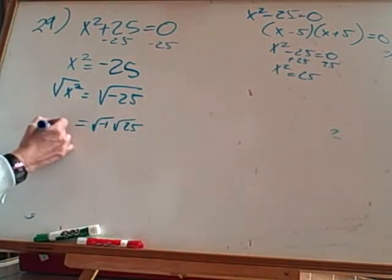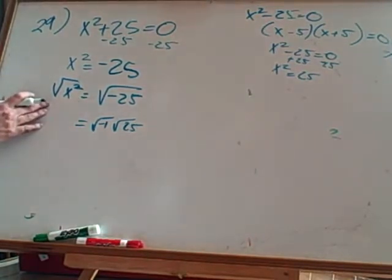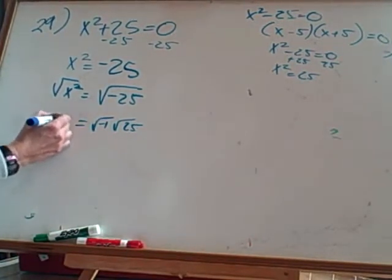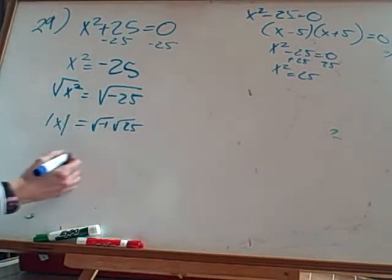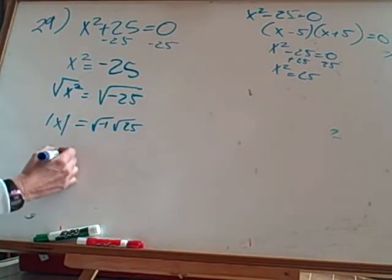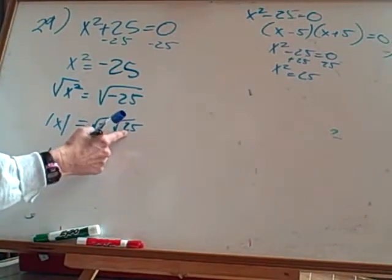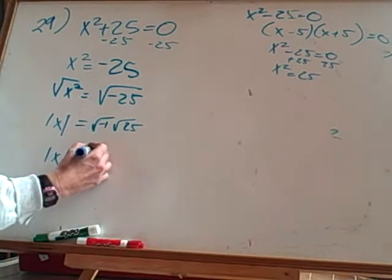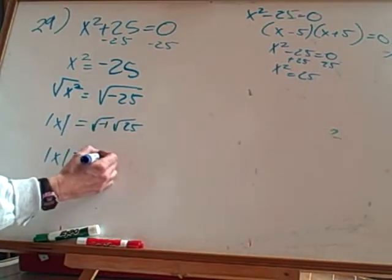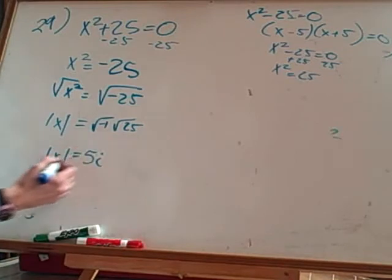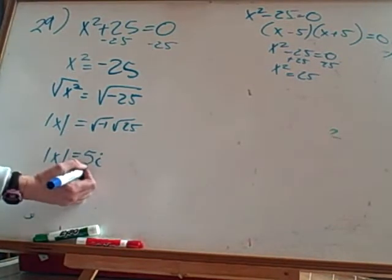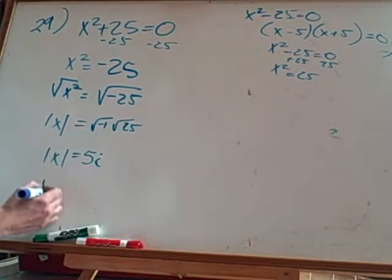What is the square root of x²? The absolute value of x. Perfect. So I'm just going to leave absolute value there for a second. The square root of 25 is 5, and the square root of -1 is i. So |x| = 5i, which means x equals ±5i.